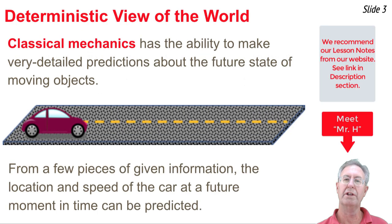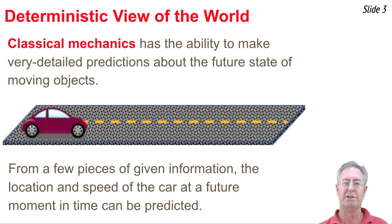Classical mechanics, of which kinematics is a branch, has the ability to make very precise and detailed predictions about the future state of motion of an object. For instance, if we know some information about the current state of motion, say the original position and the speed and the acceleration, we could predict at some later moment in time the actual position of that object. This is what the kinematic equations are all about.